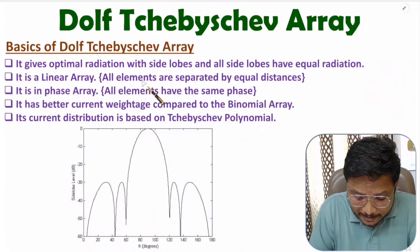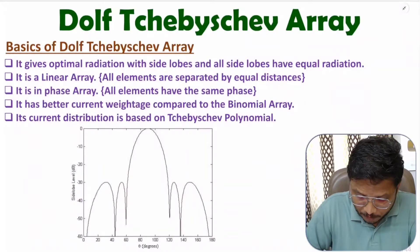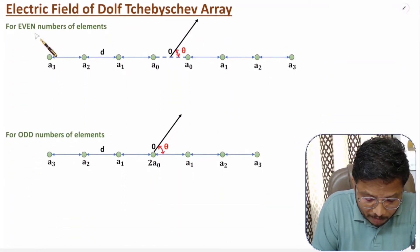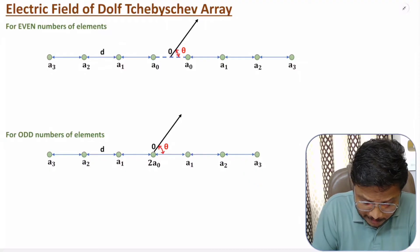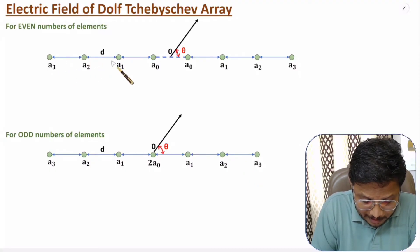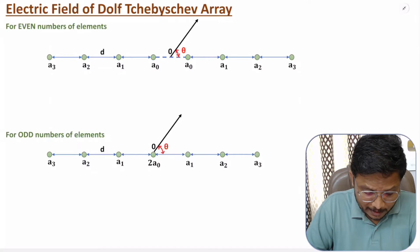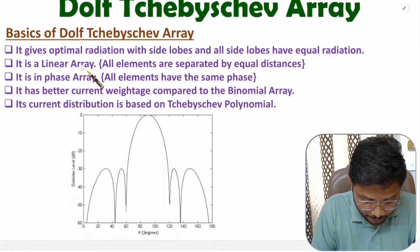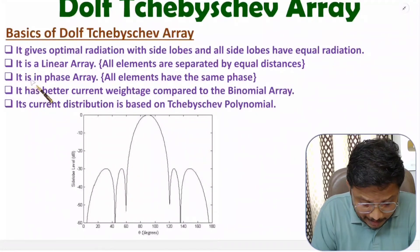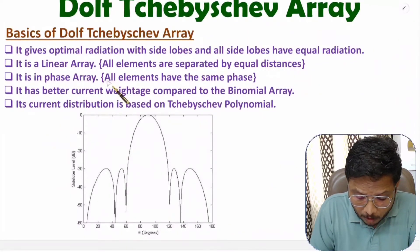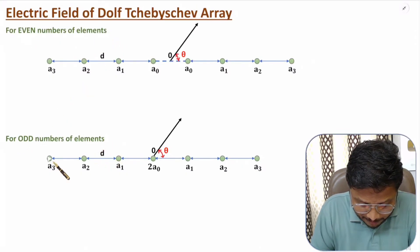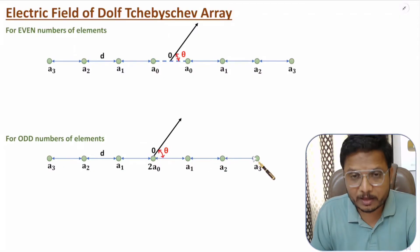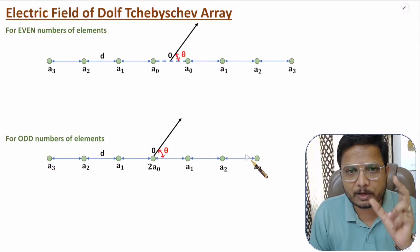With a Dolph-Chebyshev array we have a linear array, meaning all elements are separated by equal distances. We can have an even number of elements or an odd number of elements. Spacing between two elements is equal — that is a linear array. Dolph-Chebyshev array is an in-phase array, meaning all elements have the same phase, so the phase difference between elements is zero.